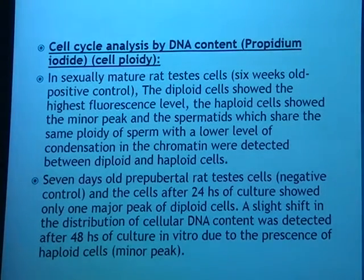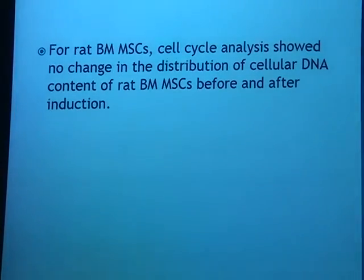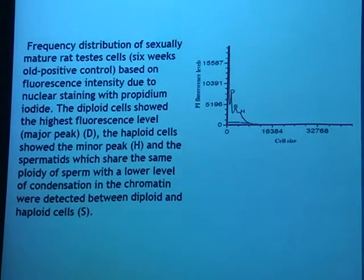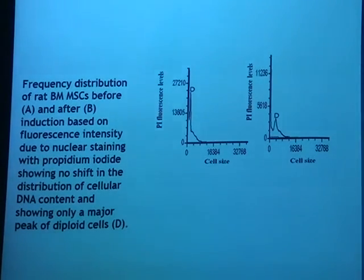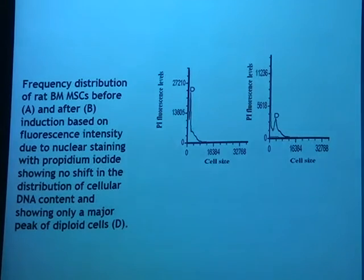We then performed cell cycle analysis and cell ploidy using propidium iodide. The cell cycle analysis for the mature testes shows the diploid cell population, the haploid cell population, and the intermediate population, which is probably spermatids. The negative control shows only a diploid cell population. For bone marrow mesenchymal stem cells before and after induction, we have a shift in the peak — diploid before induction — and after induction there is a ridge suggesting a partial haploid population, though not large enough to confirm a clear haploid peak.